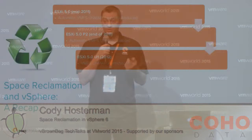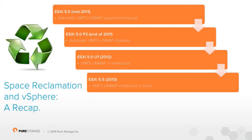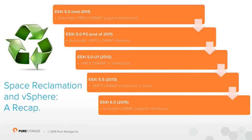In ESX 5.0 Update 1, they removed this automatic behavior completely. Instead, it's now a CLI command — VMKFS tools allows you to run it as necessary. That Enable Block Delete parameter still remained, but it didn't do anything whether turned on or off. In ESX 5.5, they enhanced the VMKFS tools operation to run UnMap inside the ESX CLI. One major benefit was that you can now easily use PowerCLI to script this procedure. In ESX 6, they now support in-guest UnMap inside of a virtual disk, not just a raw device mapping.